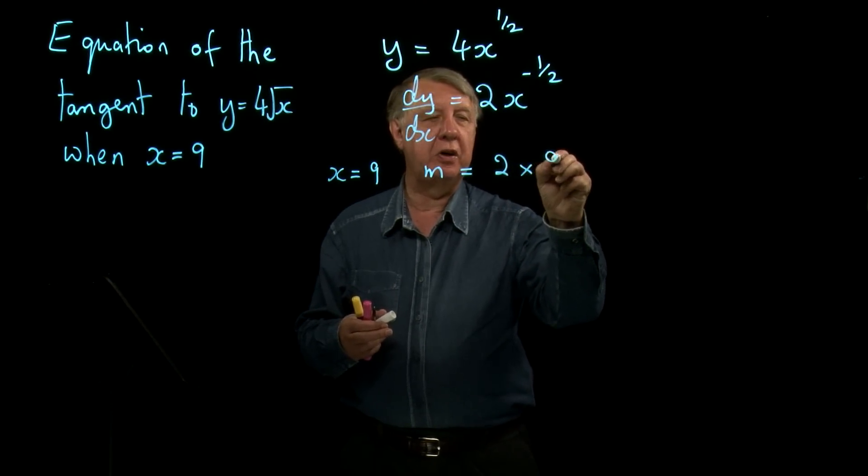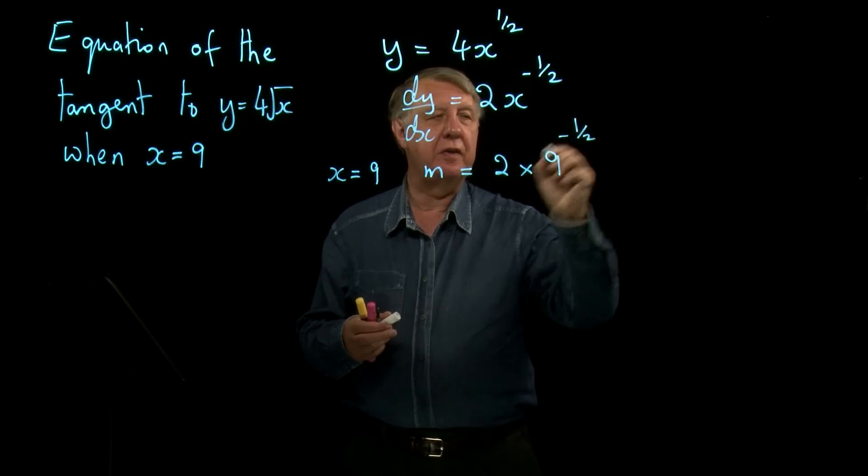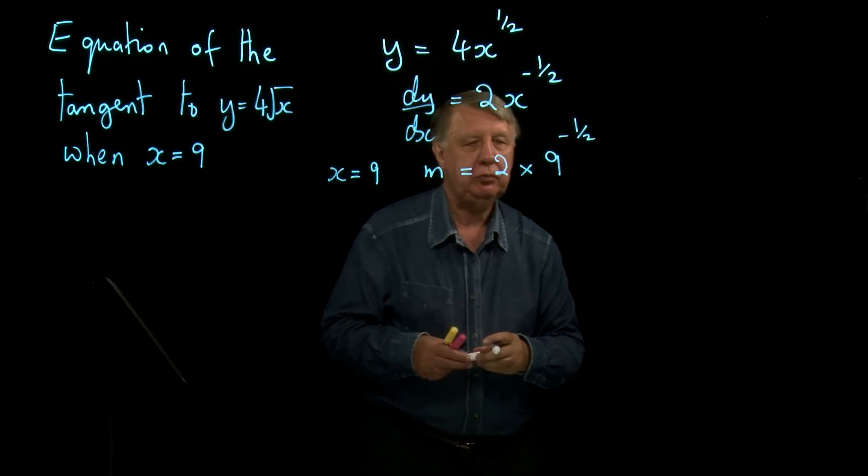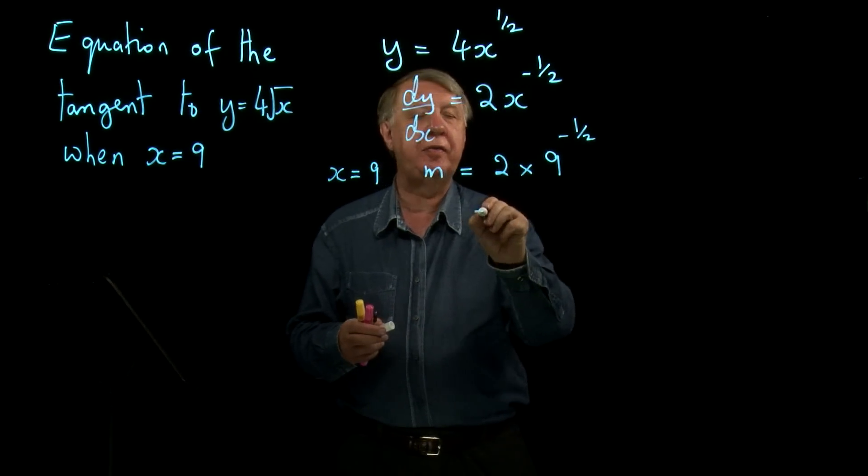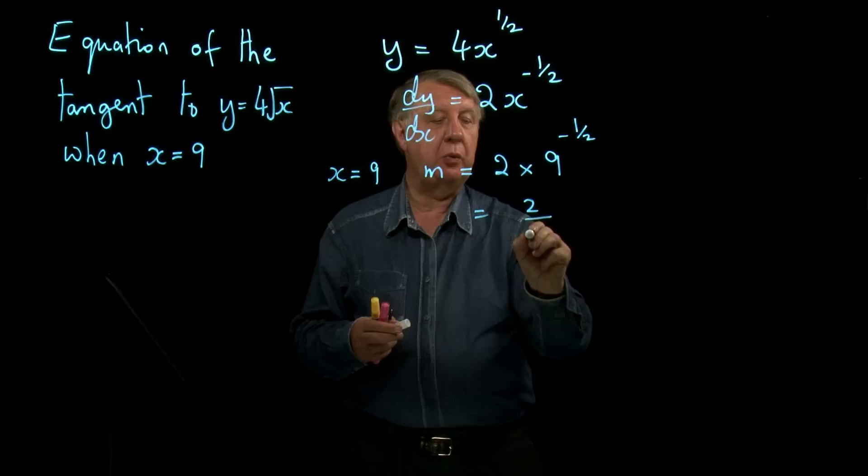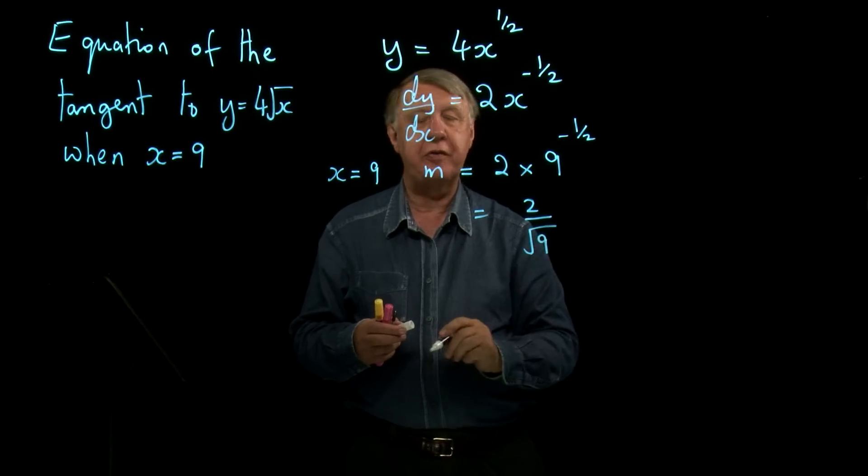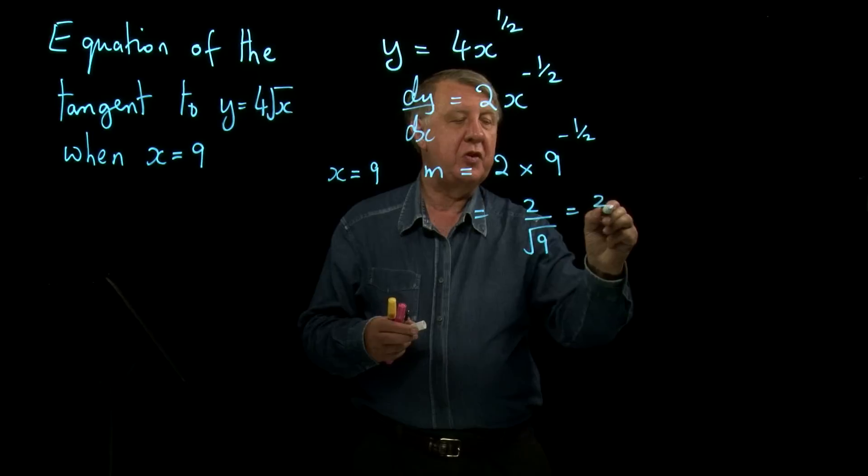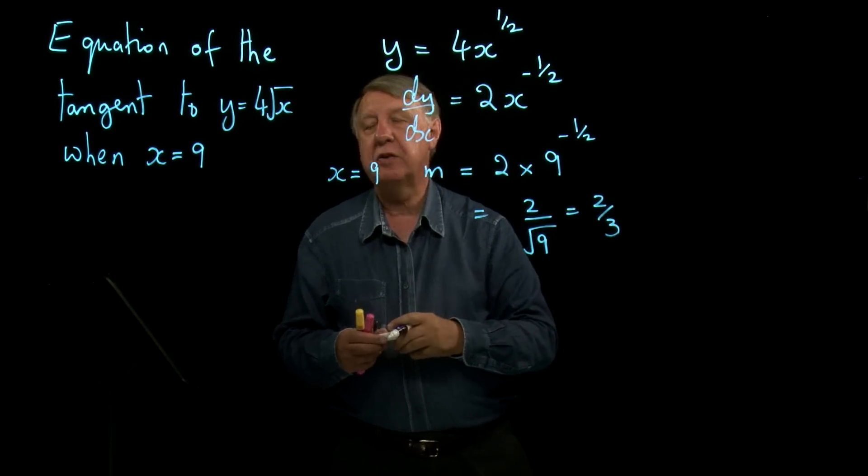I get two times nine to the negative a half. Nine to the negative a half is one over the square root of nine, which is of course three, so the gradient is two-thirds.